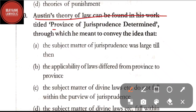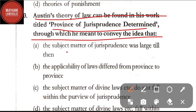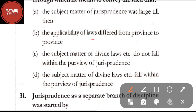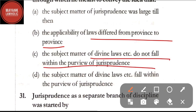Question number 30: Austin's theory of law can be found in his work titled 'Province of Jurisprudence,' through which he meant to convey the idea that — option A: the subject matter of jurisprudence was large till then; option B: the applicability of laws differed from province to province; option C: the subject matter of divine laws etc. do not fall within the purview of jurisprudence; option D: the subject matter of divine law etc. falls within the purview of jurisprudence.